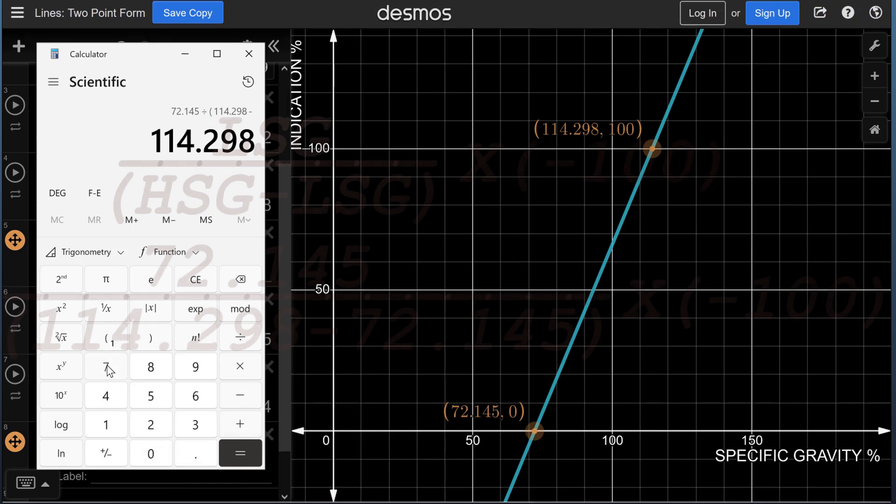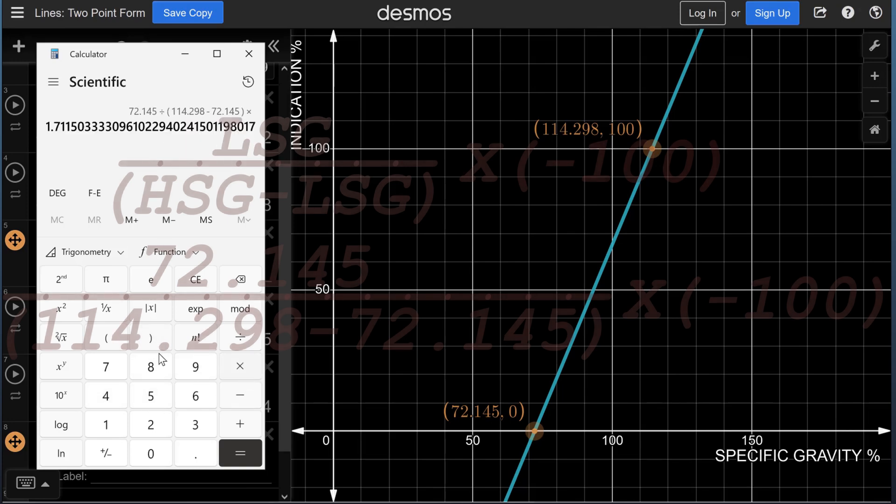This formula is the equation of the line in slope-intercept form: Y equals M times X plus B. And then the whole fraction multiplied by minus 100.